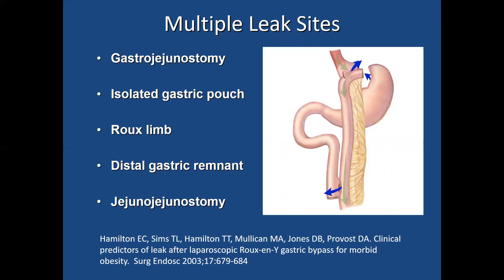Here's another important point. Even if you have a perfectly normal gastrographin swallow with no leak at the level of the pouch and gastrojejunostomy, you can still have leaks at other locations — along the cut stapled stomach or along the jejunojejunostomy. Therefore, a negative swallow does not mean you don't have a leak.